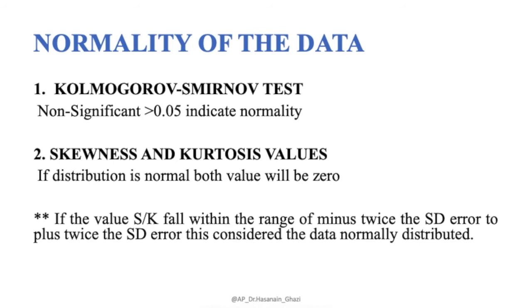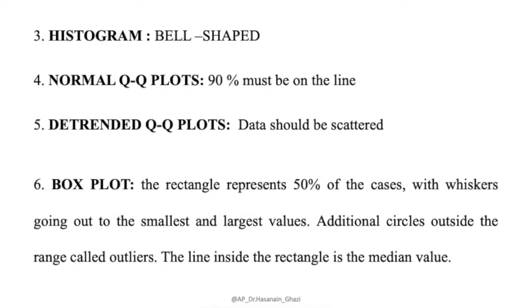There are six criteria to assess normality in SPSS under the Explore function. First, the Kolmogorov-Smirnov test — a non-significant result indicates normality. Second, skewness and kurtosis values — if normally distributed, both values will be near zero. Third, the histogram should be bell-shaped. Fourth, the normal Q-Q plot — 90% of points should be on the line. Fifth, the detrended Q-Q plot — data should be scattered. Sixth, the box plot — the rectangle represents 50% of cases with whiskers to the smallest and largest values; circles outside are outliers, and the line inside is the median.